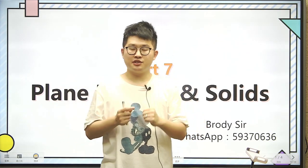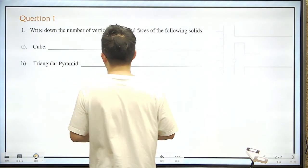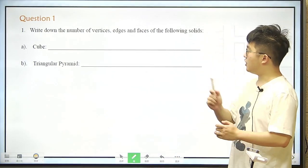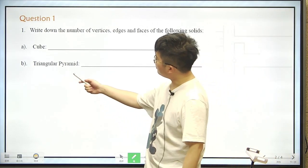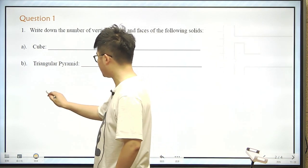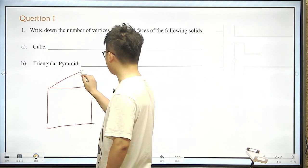Now let's start with the first one. The first one asks us to write down the number of the vertices, edges, and faces of the following solids. So the first one would be cube. What is a cube? A cube looks like this.